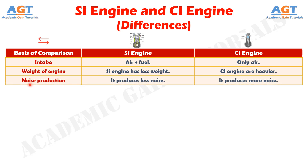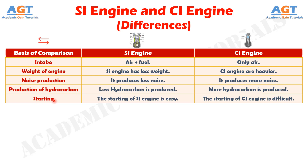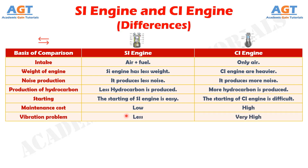In terms of noise production, SI engine produces less noise whereas CI engine produces more noise. In terms of hydrocarbon production, less hydrocarbon is produced from SI engine whereas CI engine produces more hydrocarbon. In terms of starting difficulty, starting of SI engine is easy whereas starting of CI engine is difficult. In terms of maintenance cost, maintenance cost of SI engine is low whereas maintenance cost of CI engine is high. In terms of vibration, SI engine causes less vibration whereas vibration is very high in CI engine.